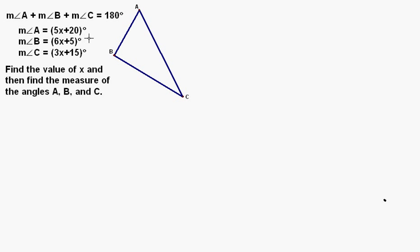We are given that the measure of angle A is equal to the expression 5x plus 20. The measure of angle B is equal to the expression 6x plus 5. And the measure of angle C is equal to the expression 3x plus 15.